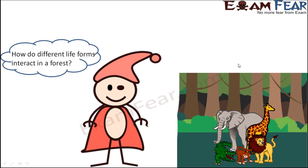Now the question is: when so many different types of living organisms live inside a forest, how do these different life forms interact with each other? Animals are there, insects are there, birds are there, plants are there. How are they dependent on each other? That is something which we are going to understand in the next section.